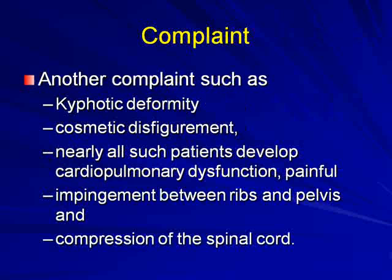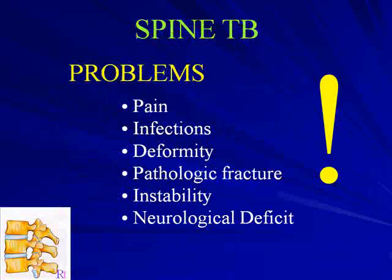Besides the deformity, patients also present with cosmetic disfigurement. Nearly all patients develop cardiopulmonary dysfunction due to reduced lung capacity, painful back, impediment between the ribs and pelvis, and compression onto the spinal cord. So the problems in TB spine include pain, infection, deformity, pathologic fracture, instability, and neurological deficit.